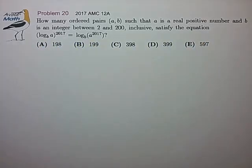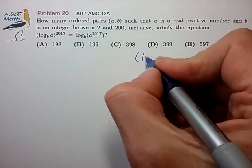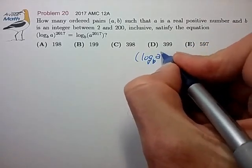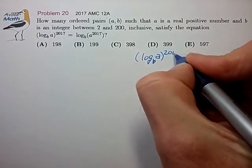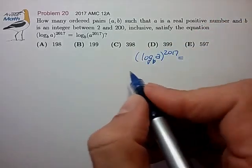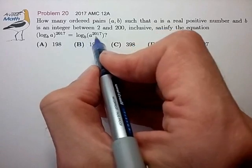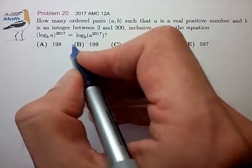Okay, this is our one log problem for this AMC year, so let's see if we can break this down. We have log to the base b of a to the power 2017 equals, and using the log rule for exponents, we can bring the 2017 outside.